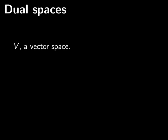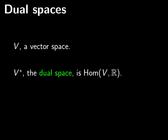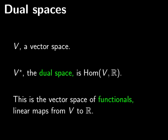The dual space is the space of linear functionals. To define the dual space, you start with a vector space V. V star, the dual space, consists of homomorphisms from V into R — linear maps that start at V and end in R. This dual space is again a vector space: the vector space of linear functionals on V, just linear maps from V to R.